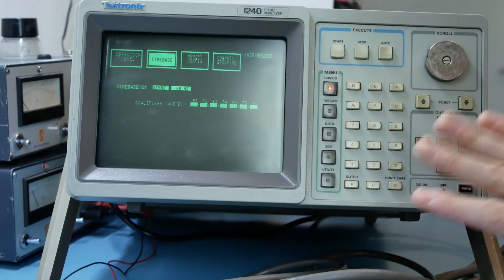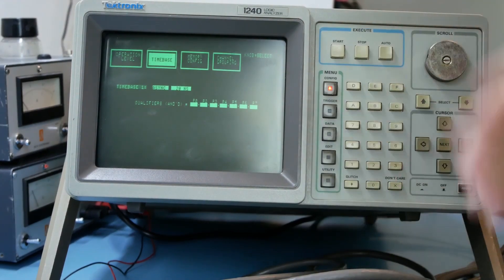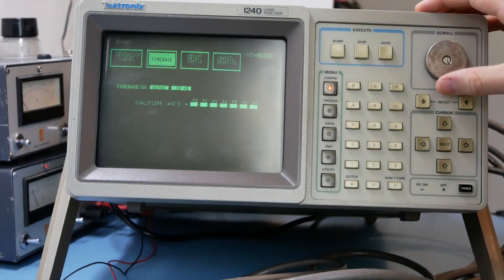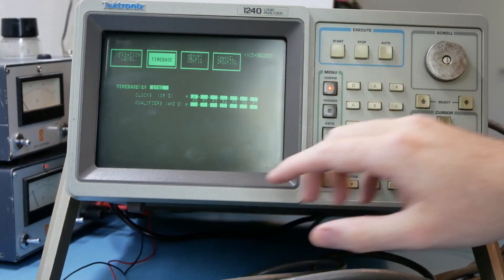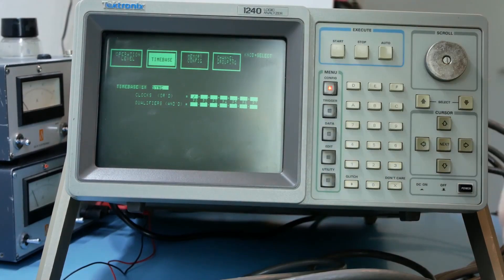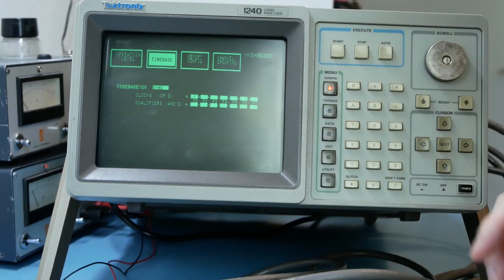In timebase you can set up the clocks used as a timebase. In asynchronous timebase an internal clock is used to take a sample every 20 nanoseconds or any interval you might like. And in sync timebase the clock input of a probe pod is used as a clock which is what we'll be using for the 6502.